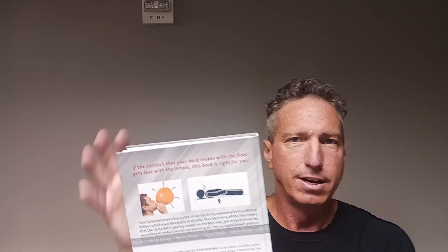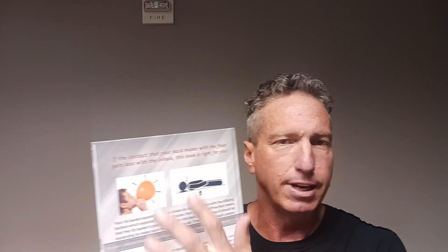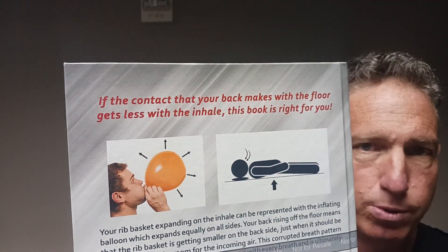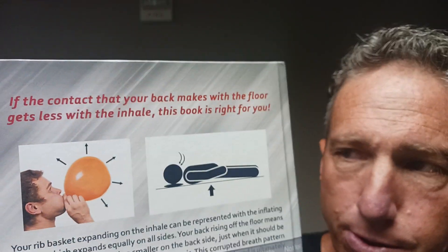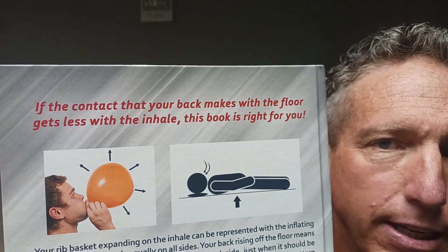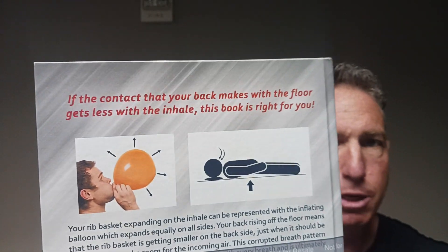On the back cover of my book I have two simple diagrams. In the first diagram you can see a man inflating a balloon. Pay special attention to the arrows on the balloon, which indicate that the balloon is expanding equally in all directions. When you take an inhale, your rib cage should be behaving in much the same way — expanding more or less equally in all directions.